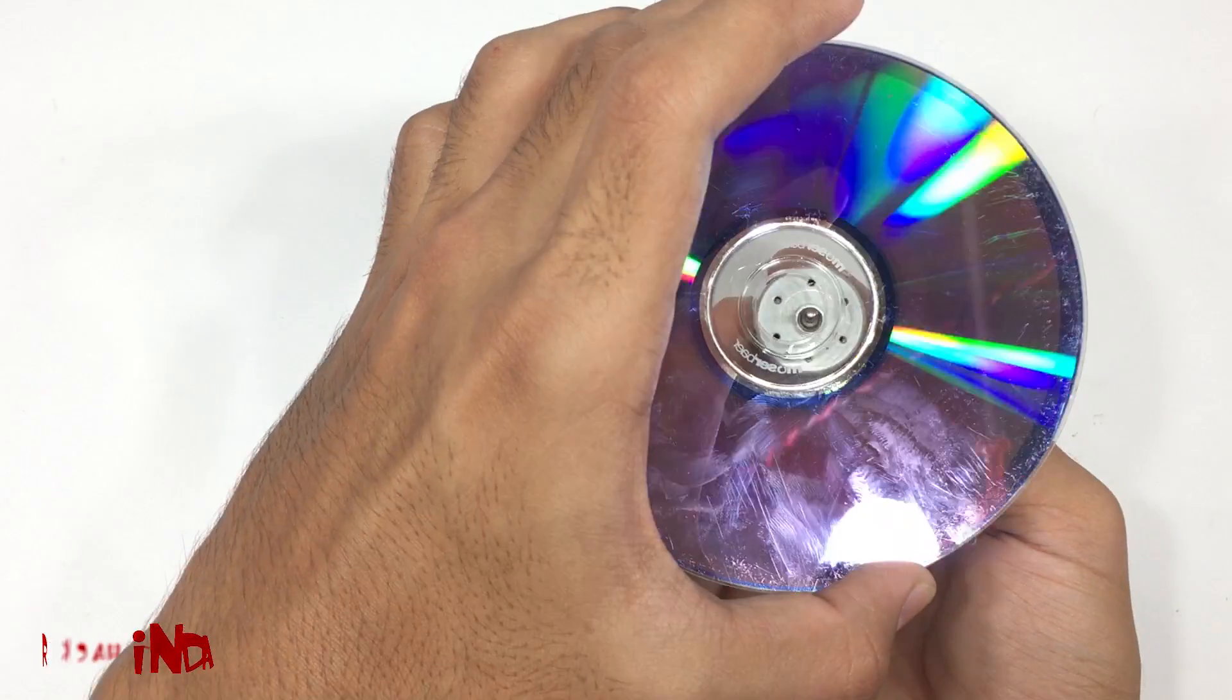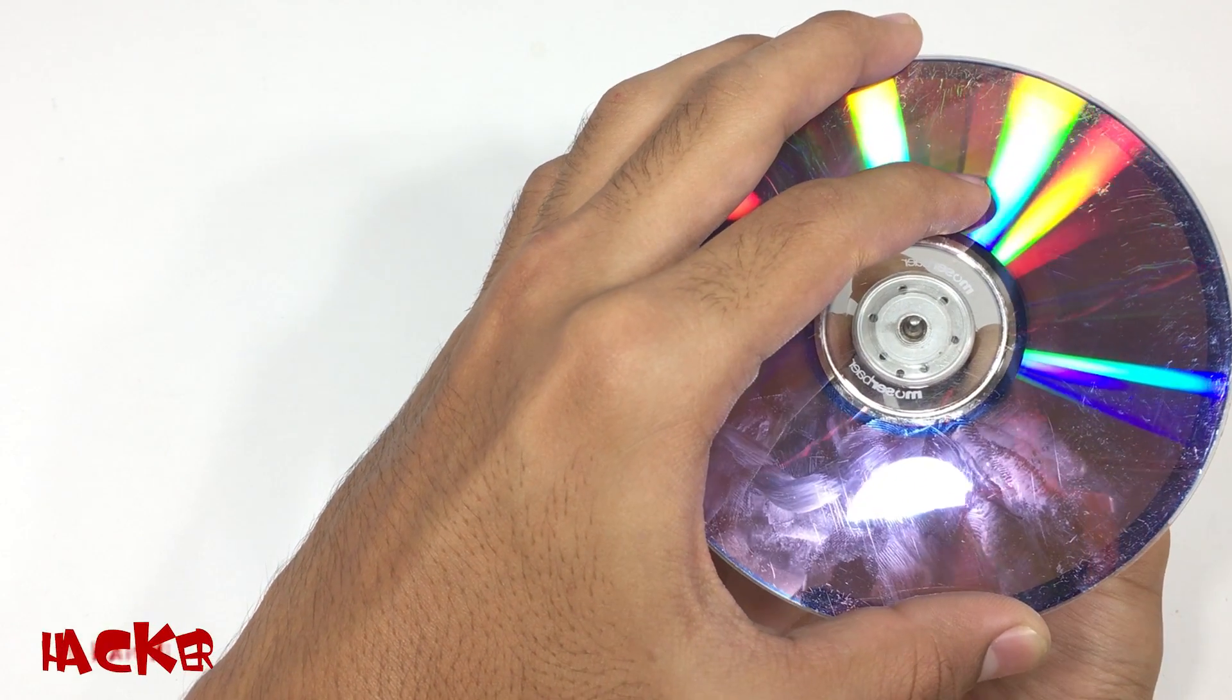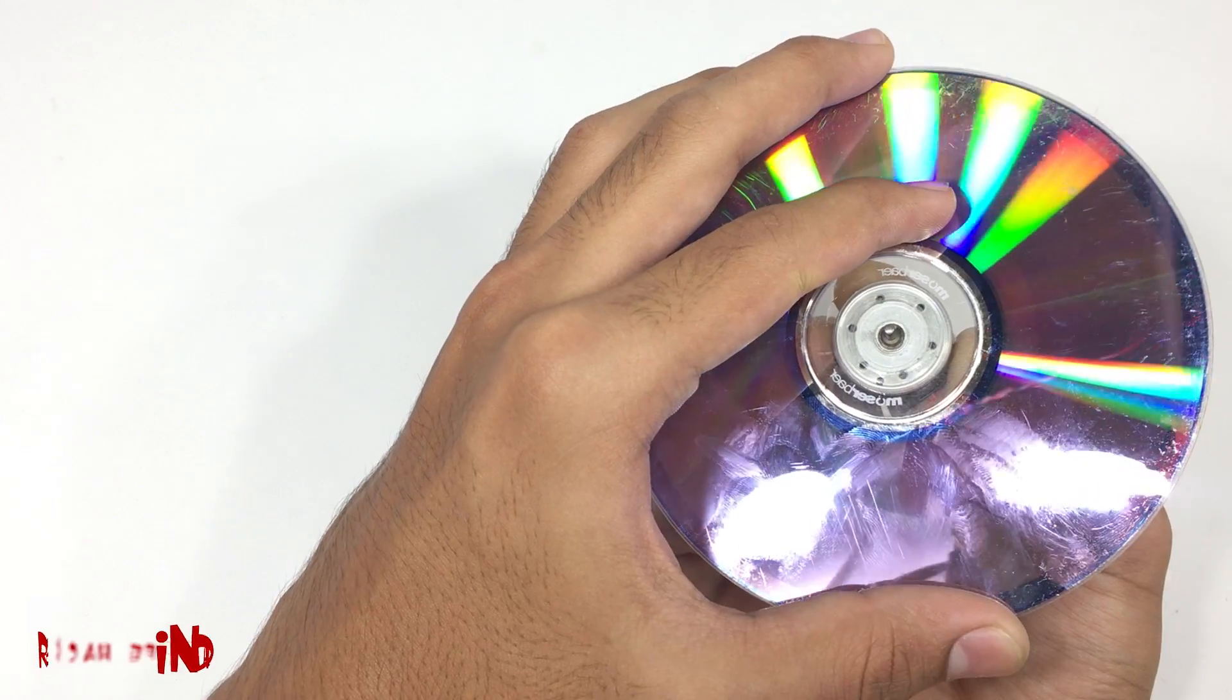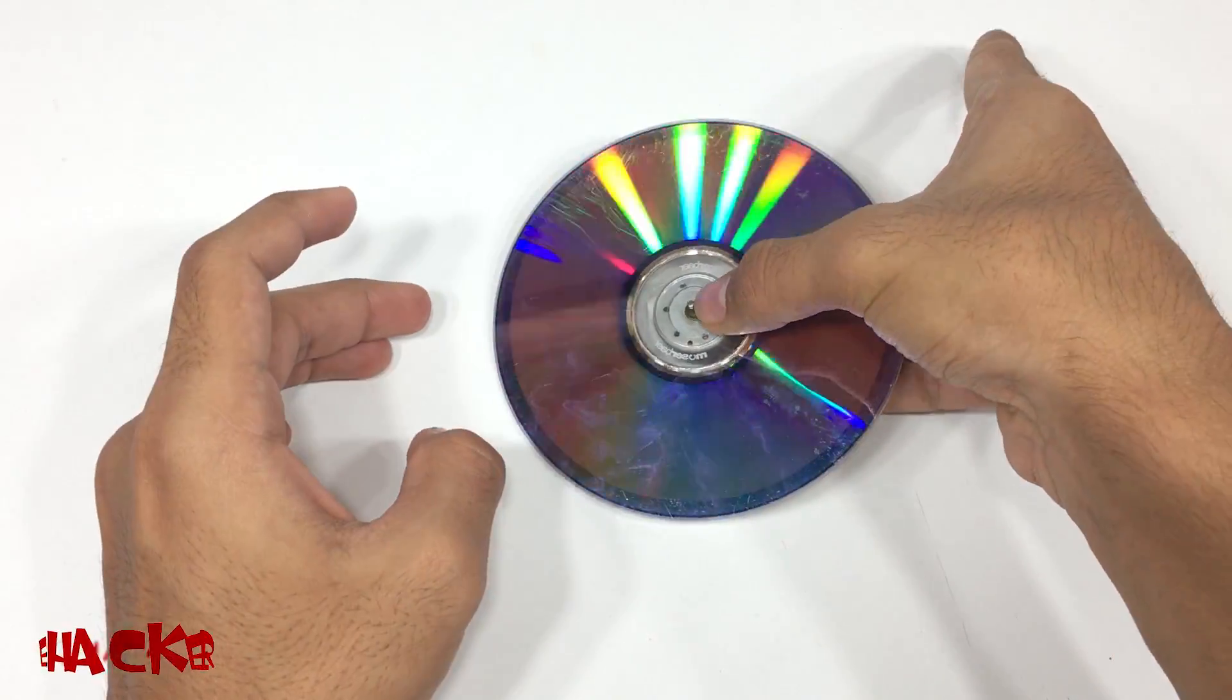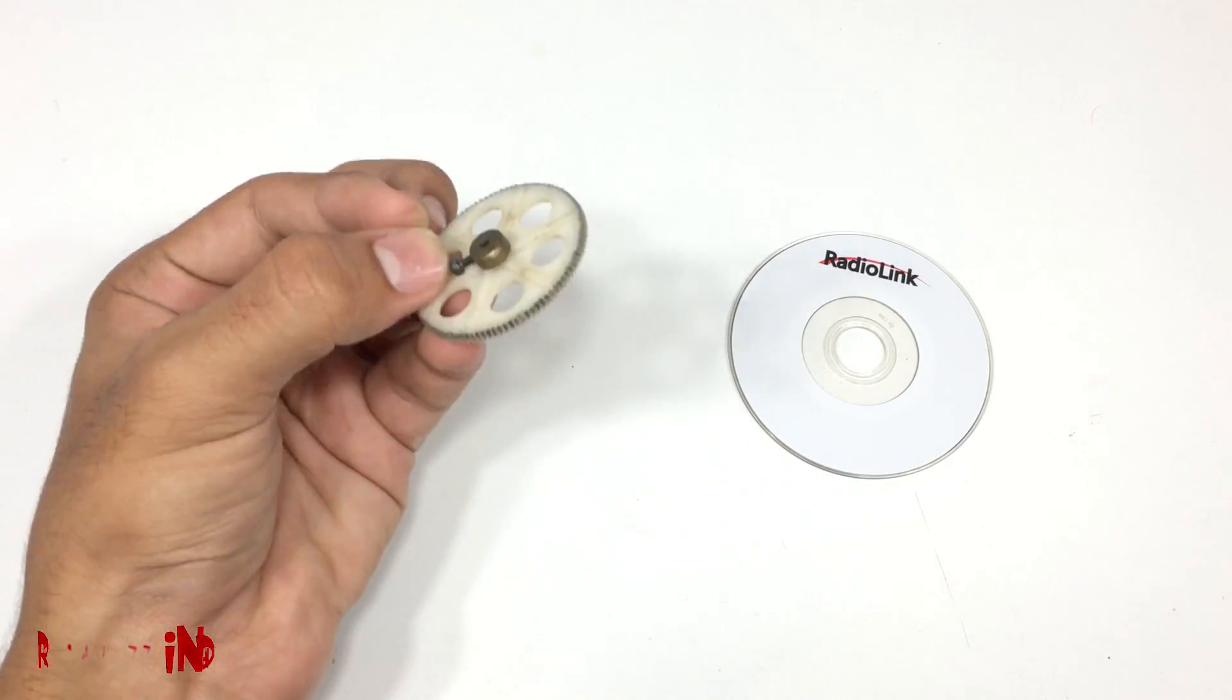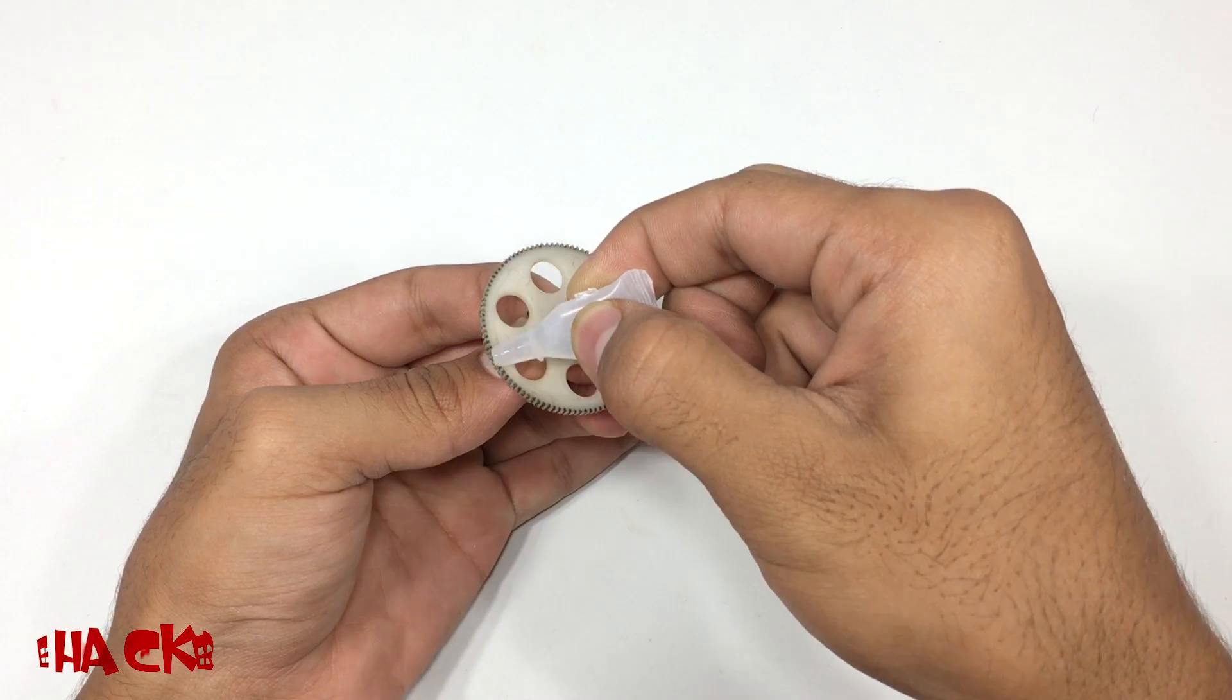Now fix the motor on the bigger CD. And a gear or something like this fix on small disc which can be directly fixed with the motor.